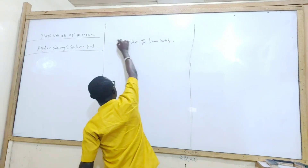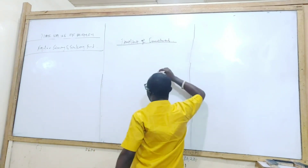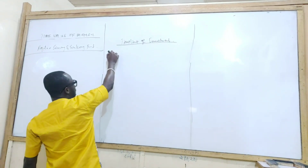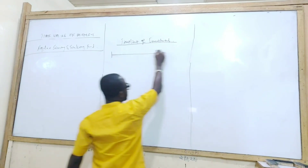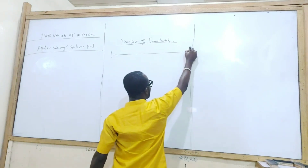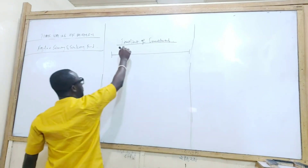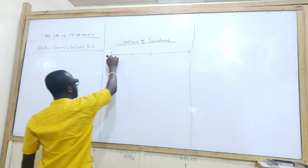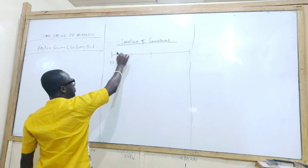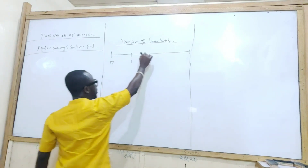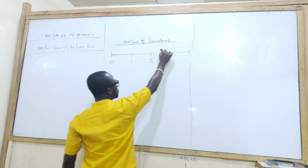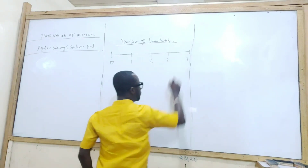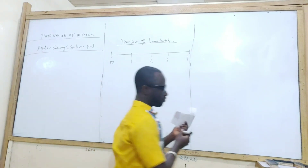When we have the timeline of the investment, this is how you draw it. How many years do we have? Year zero, year one, year two, year three, and year four. This will be called a payment timeline.